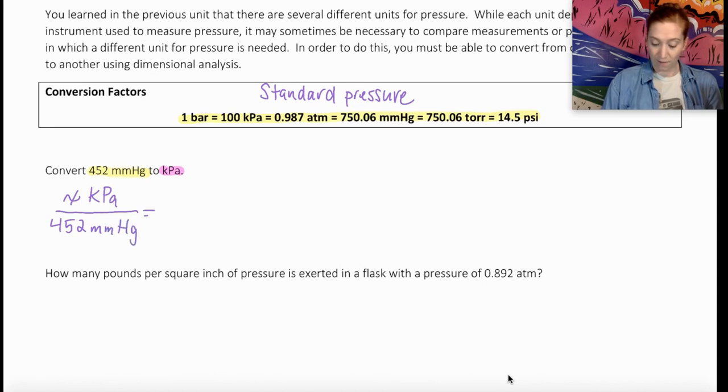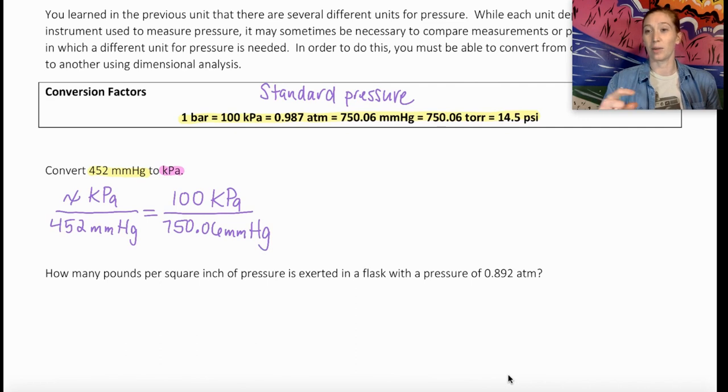So I want to know how many kilopascals there are in 452 millimeters of mercury. Now, my conversion factor I can get from all of those standard pressure units. And all I want to do is match these up. So what I know is that at standard pressure, we're going to have a pressure of 100 kilopascals and 750.06 millimeters of mercury. So that's my comparison, my ratio between those two units of pressure.